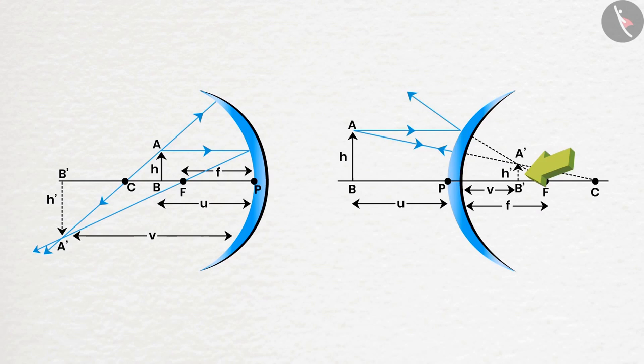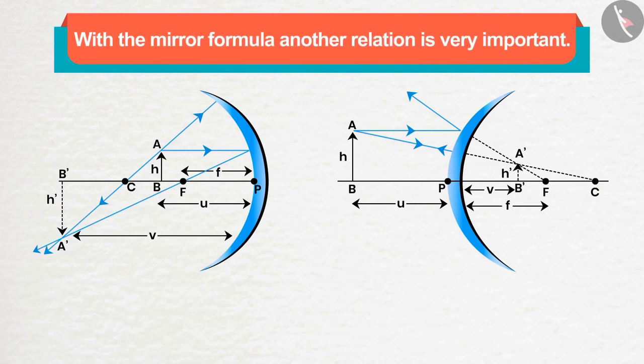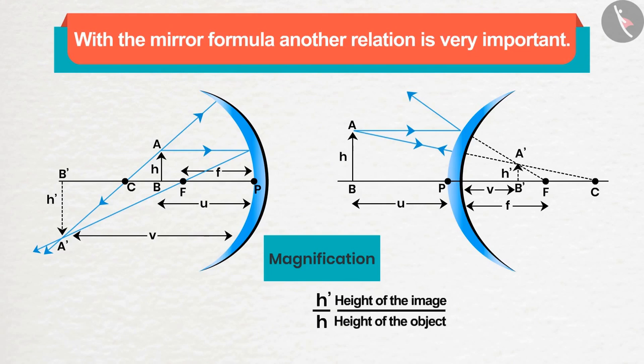the object and sometimes smaller. How large or small are they? Along with the mirror formula, another relation is very important which is called magnification. Magnification is the ratio of the height of the image to the height of the object, which tells us how many times the image is larger or smaller with respect to the object. Magnification is represented by m. We can also represent it in terms of object and image distance. You must have read in